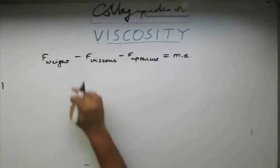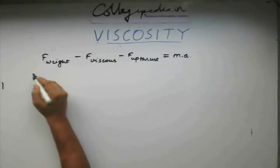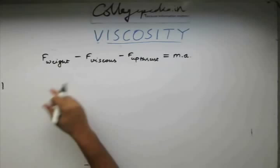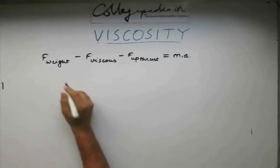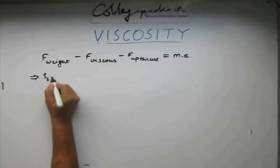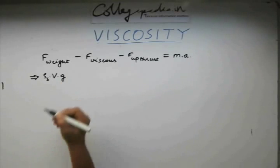Let's write the mathematical expressions for each of these terms. For the weight, we will have the mass of that spherical object times the acceleration due to gravity. The mass will be ρs times its volume times the acceleration due to gravity.